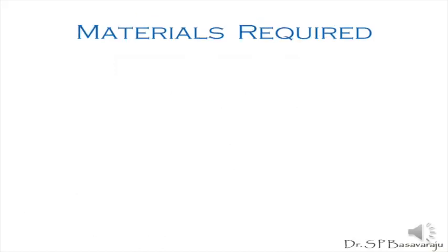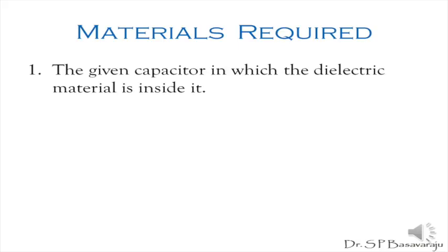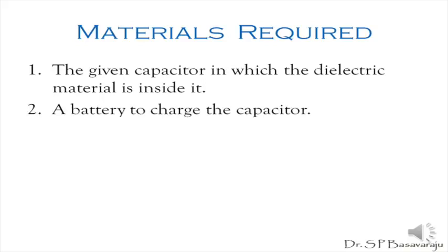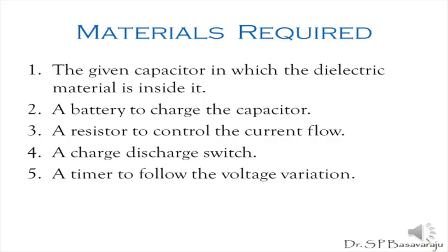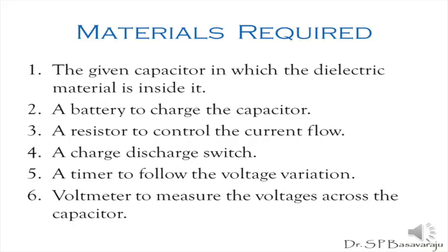So we need the following materials to do the experiment: 1. The given capacitor which has the dielectric material inside it — we are actually finding the dielectric constant of this material. 2. A battery to charge the capacitor. 3. A resistor to control the current flow. 4. A charge-discharge switch. 5. A timer to follow the voltage variation. 6. A voltmeter to measure the voltage across the capacitor.